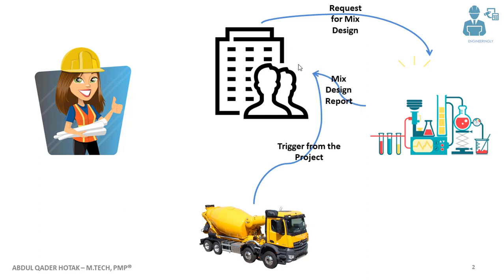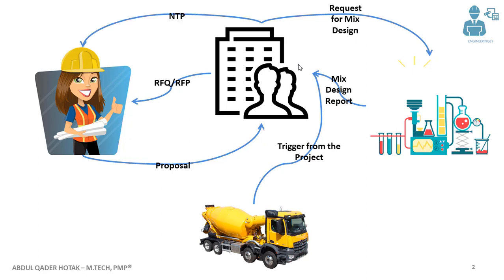Once the mixed design report is prepared, the company will send an RFP or RFQ to the contractor. The contractor will send out their proposal for the work to the company. The organization, in response to the contractor's proposal, awards the activity to the contractor and sends out a notice to proceed. Once the contractor receives this NTP, they send out their human and physical resources to deliver the activity.